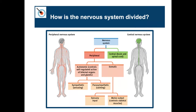The whole nervous system can be initially divided into the peripheral nervous system and the CNS — the central nervous system. The peripheral nervous system has two main components: the somatic and the autonomic. The somatic nervous system enables voluntary control of our skeletal muscles, while the autonomic controls self-regulated action of internal organs and glands. The central nervous system is made up of the brain and the spinal cord.